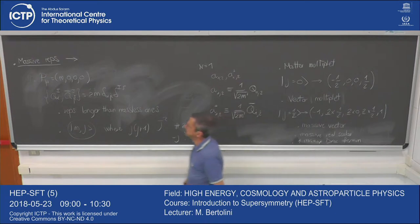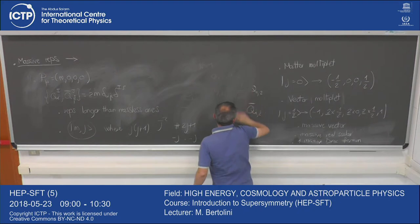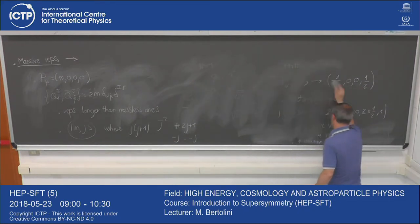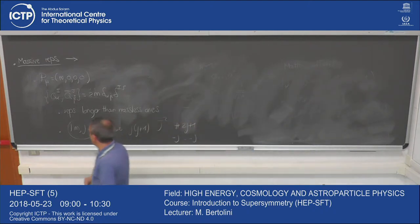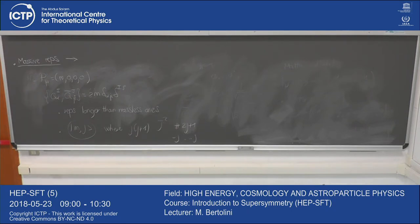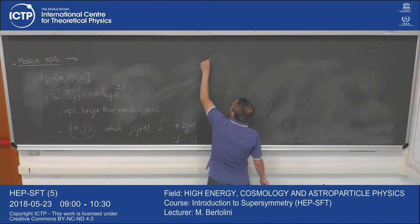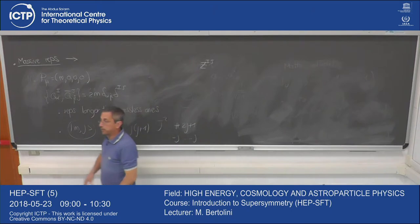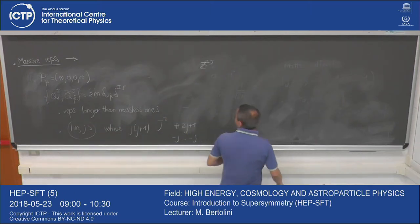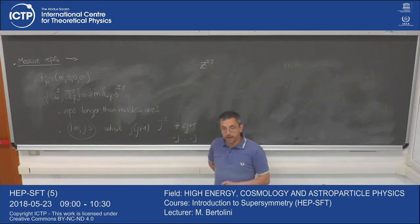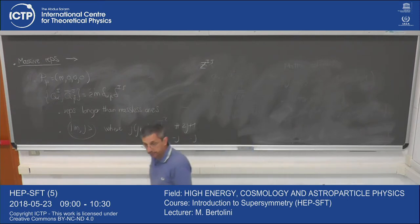Now let's go to extended supersymmetry. For N equal to 1 there are no central charges, because the central charges Z_{ij} are anti-symmetric in i and j, and with only one index they are identically zero. The question of whether central charges vanish is therefore only relevant for extended supersymmetry. Now that we discuss extended supersymmetry I also allow for non-vanishing central charges, unlike the massless case yesterday. You will also finally appreciate why we did not discuss massless representations with central charge.